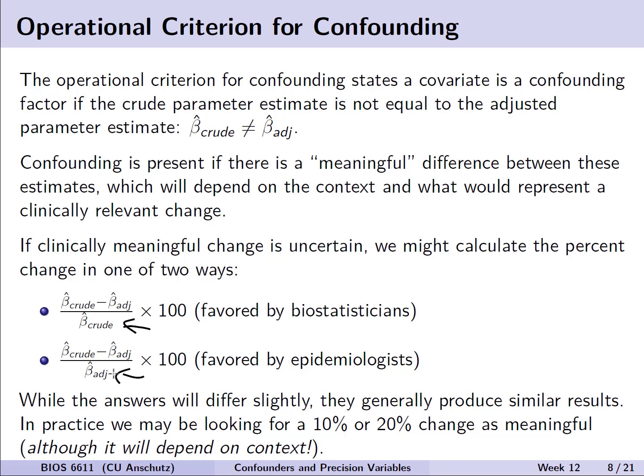This will result in slightly different answers, but they generally produce similar results. In practice, a good benchmark might be a 10 or 20 percent change as meaningful, although it will depend on context. If you have more information, that may help inform whether a smaller or larger change is needed to determine confounding is present.